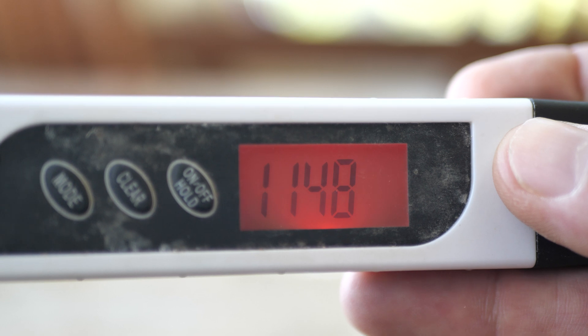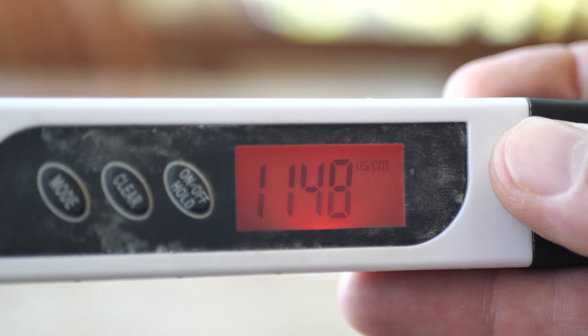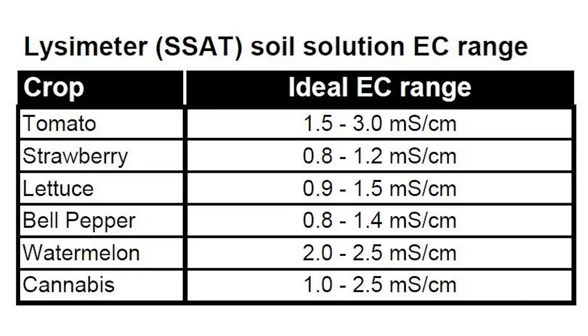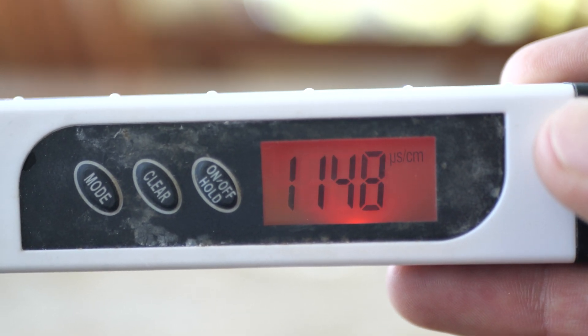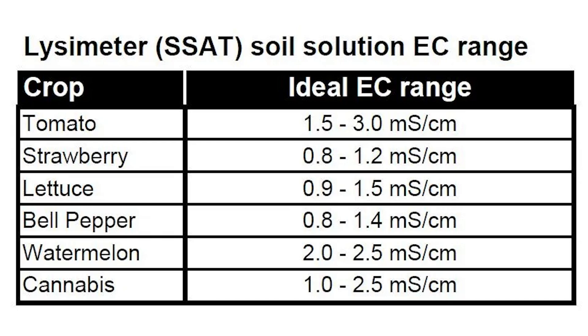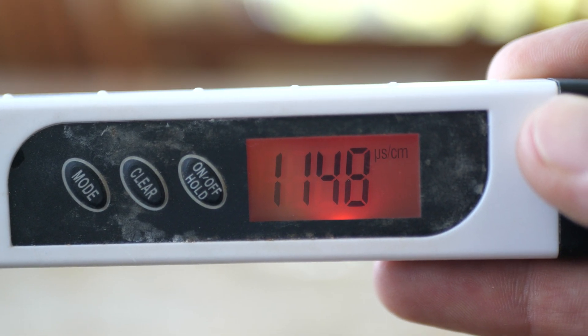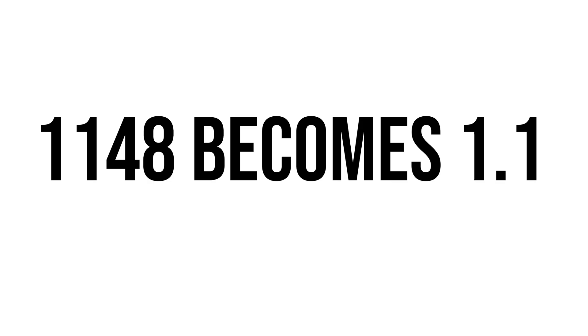EC is actually measured in millisiemens, but this meter displays microsiemens, so we're going to have to do a little conversion. When we look at charts online and reference guides, we're getting EC in the thousandths, but we really need it broken down into the tenths. An easy way to convert is to just move the decimal place over three times to the left. Then you can drop those last few numbers to keep it simple and stick with the first two numbers — that's going to be the EC as you see it online when looking for nutrient information.